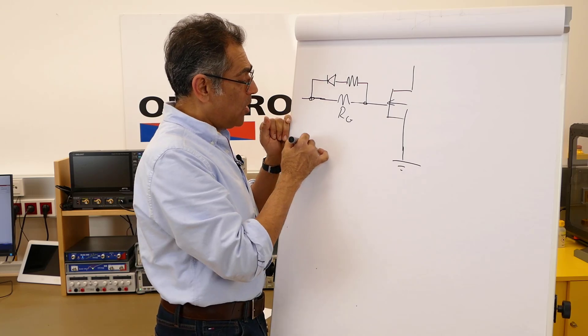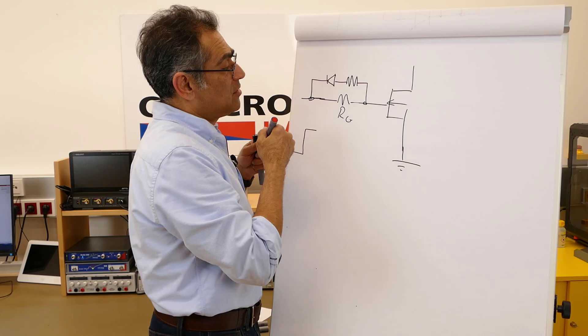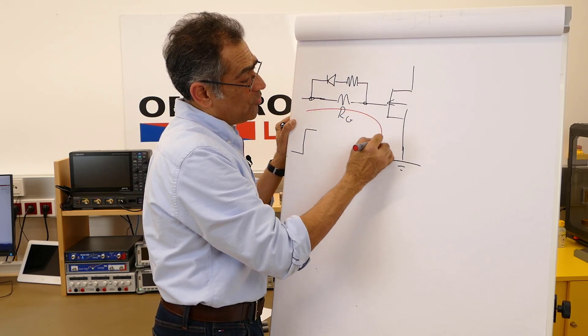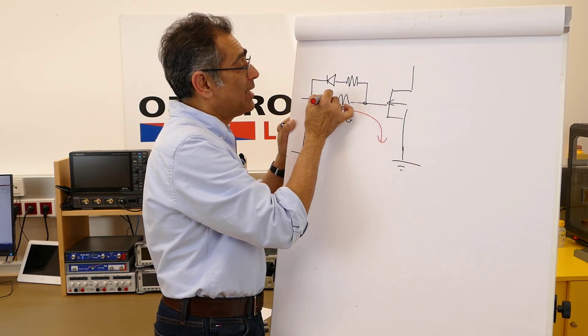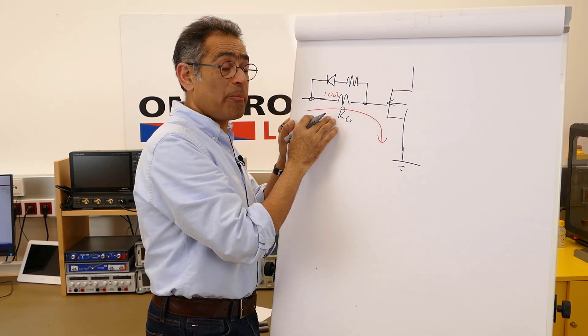During the turn-on, when my gate signal goes high, this diode is reverse biased and therefore the current will go through this resistor in order to charge the gate and turn it on. For simplicity, let's say this is 10 ohms, and you can slow this down or speed it up.